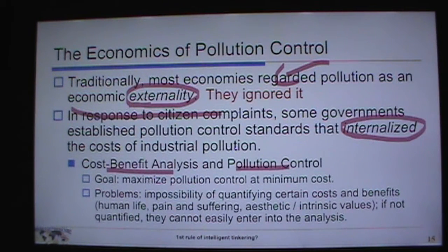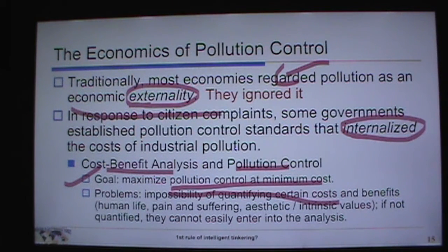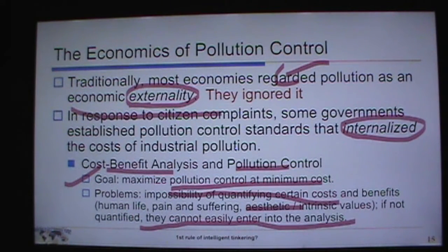The goal of pollution control cost-benefit analysis is to maximize pollution control at minimum cost — by taking care of waste before it leaves the factory. However, there are problems: it's impossible to quantify certain costs and benefits. Human life, pain and suffering, and intrinsic values are hard to quantify, and if they can't be quantified, they tend to be ignored. Our job as environmental scientists is to try to quantify those benefits and costs.